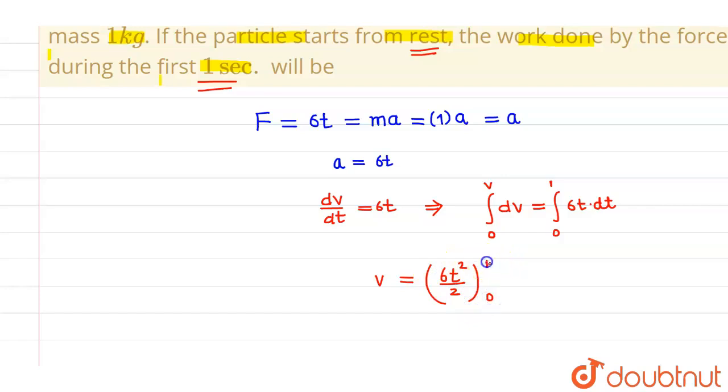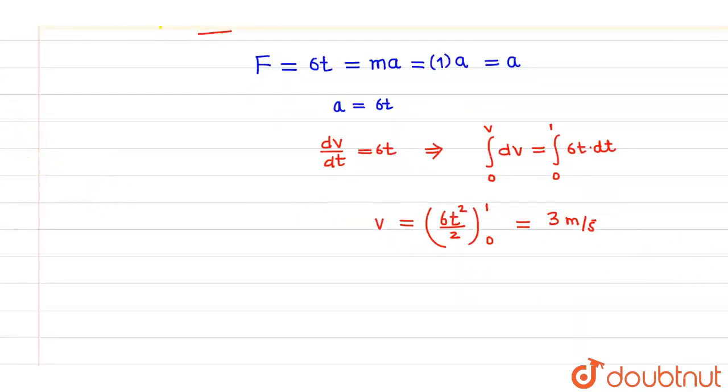Now since we have to find out work done, work done will be given by change in kinetic energy. So this will be final kinetic energy half mv squared minus initial kinetic energy half mu squared.